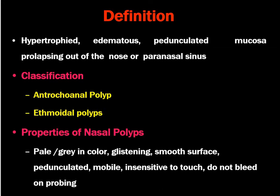What are the properties of nasal polyps? They are pale or grey in colour, they are glistening, having a smooth surface, they are pedunculated, mobile, insensitive to touch and do not bleed on probing.